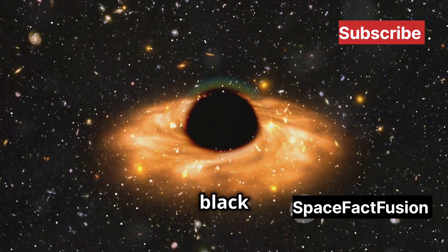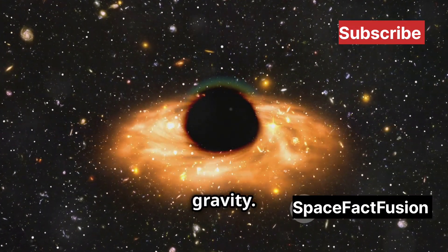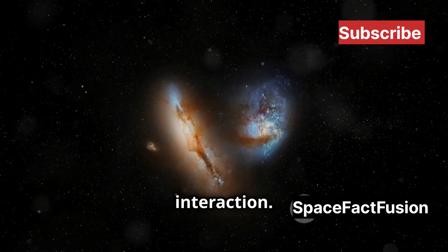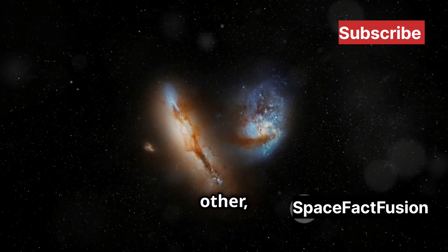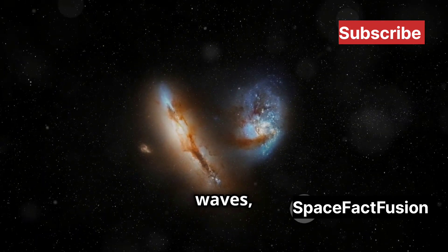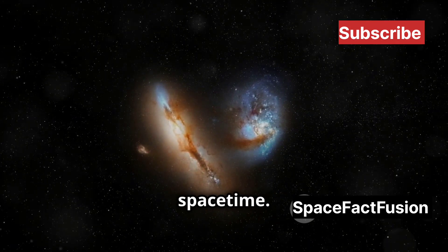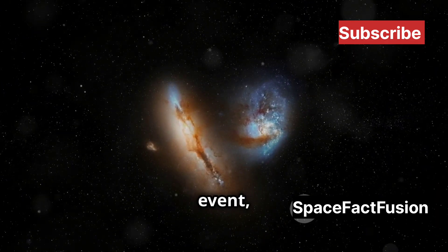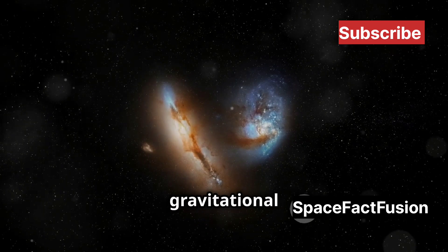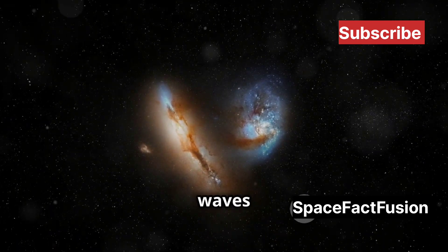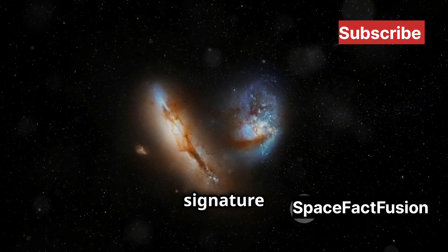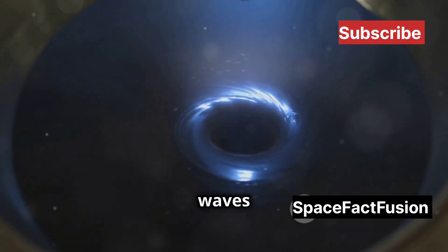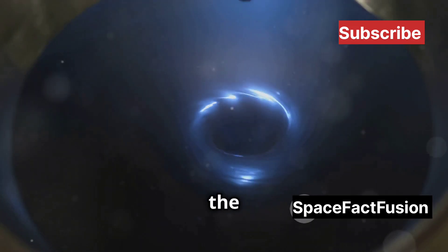Imagine a cosmic dance of black holes, drawn together by their mutual gravity. This dance is not a gentle waltz, but a violent and energetic interaction. The black holes orbit each other, losing energy through the emission of gravitational waves, which are ripples in the fabric of space-time. As they spiral closer, they eventually merge in a cataclysmic event, releasing a torrent of energy in the form of gravitational waves. These waves travel across the universe, carrying with them the signature of the black holes' final moments before merging. The detection of these waves has opened a new window into the study of the cosmos.